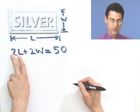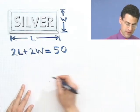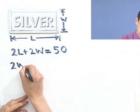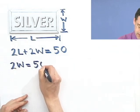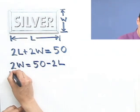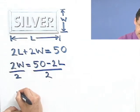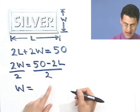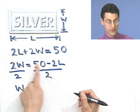Well, I bring the 2L over to the other side. If I bring the 2L over to the other side, I would have 2W equals 50 minus 2L. And if I now divide both sides by 2, then these cancel here. And I'm left with W equals, and I can divide everything through by 2 or factor out a 2.